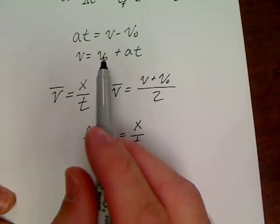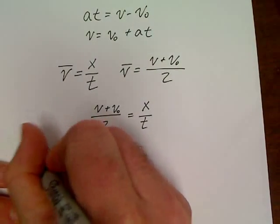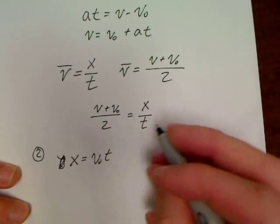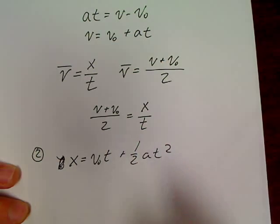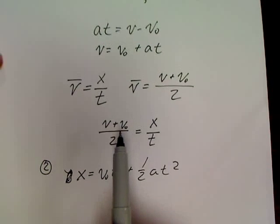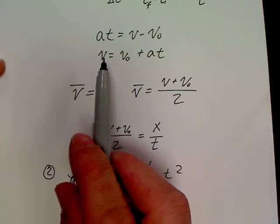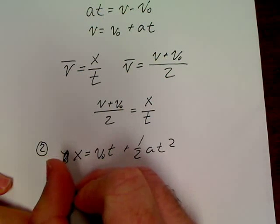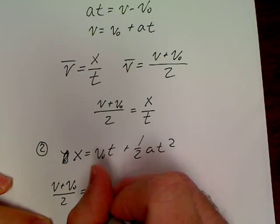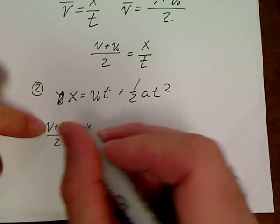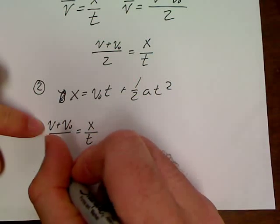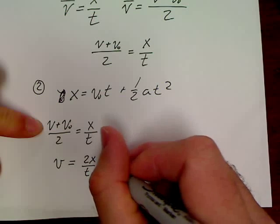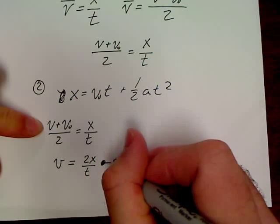If we want to try and derive the second kinematic equation, in other words, if we want to derive x equals VOT plus one half AT squared, all we're going to do is solve this equation for v and substitute it back into the first kinematic equation. So v plus vo over 2 equals x over t. Solve this equation now for v, and we would have v would be equal to 2x over t minus vo.